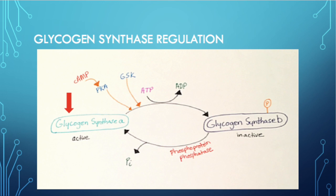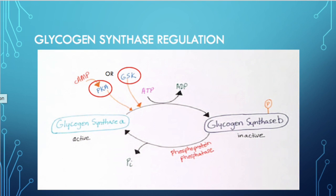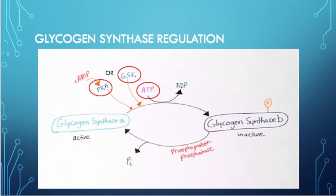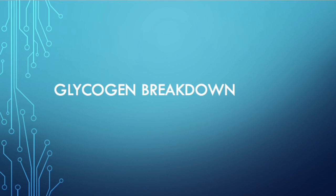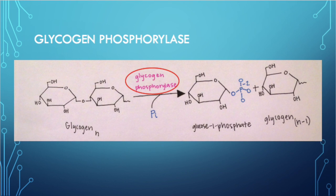Thus far we have discussed how to synthesize glycogen and add glucose to a glycogen chain as a storage molecule. We will now discuss how glucose is removed from the glycogen chain. The first step in glycogen breakdown utilizes glycogen phosphorylase, which cleaves an alpha-1,4 glycosidic bond of a terminal glucose molecule that has a free hydroxyl group located on the fourth carbon.